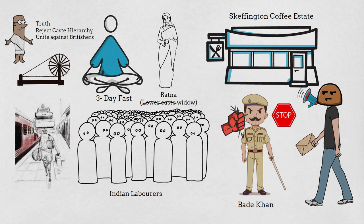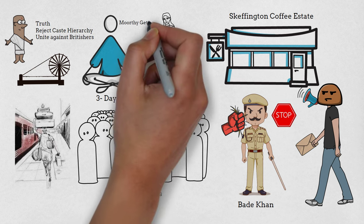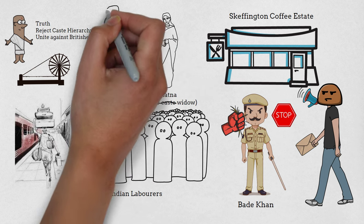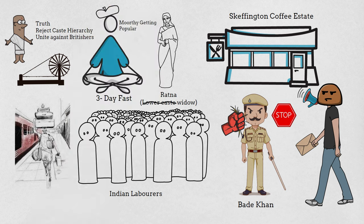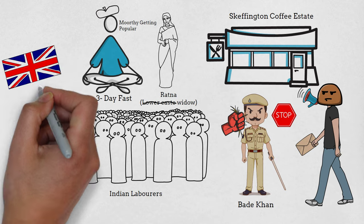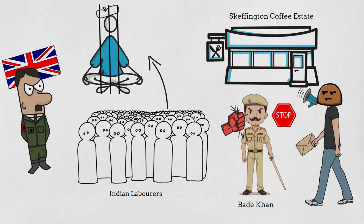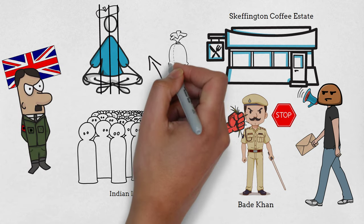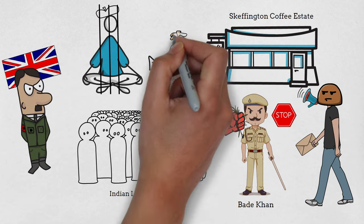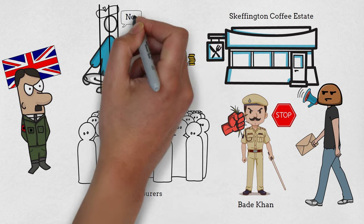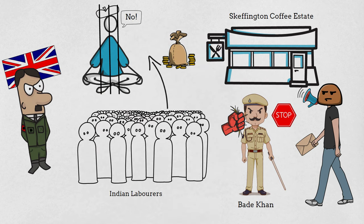Everything Moorthy does in the village makes him more and more popular, and over time he becomes the leader of a committee. The British government blames Moorthy for violence and arrests him. All the volunteers of the committee arrange money to pay his bail, but Moorthy refuses and spends the next 3 months in prison.